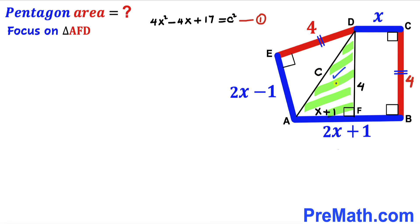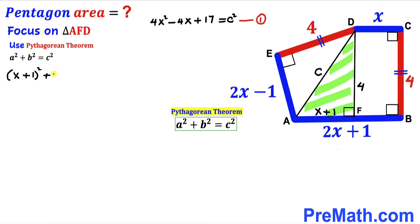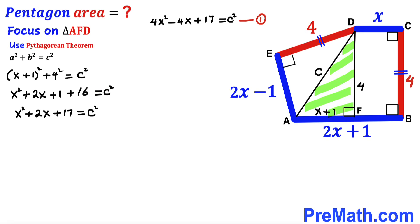Next we apply the Pythagorean theorem to right triangle AFD. Our hypotenuse is again c, and the two legs are x plus 1 and 4. So: (x + 1)² + 4² = c². Expanding using (a + b)² = a² + 2ab + b² gives x² + 2x + 1 + 16 = c². This is Equation 2.